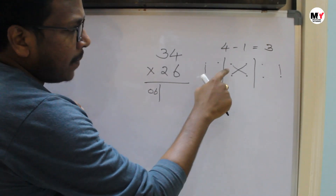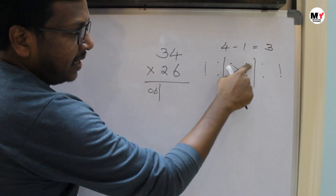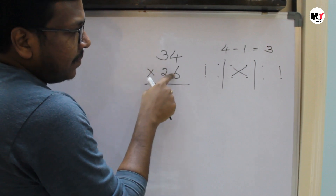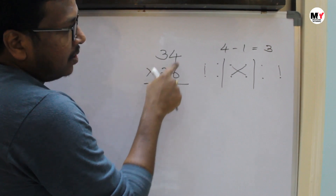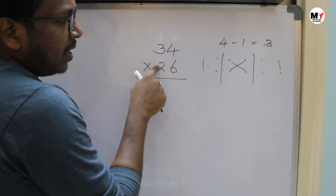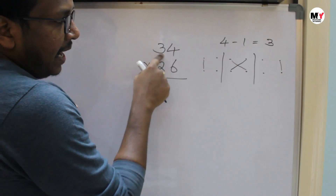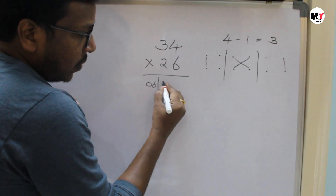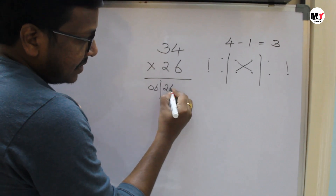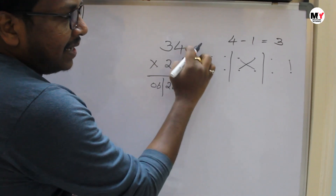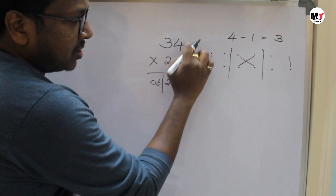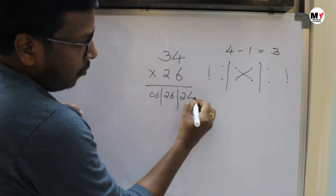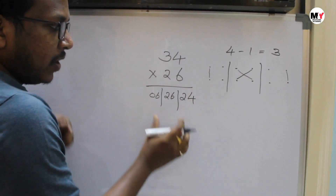Then multiply vertically and then add them: 3 times 6 is 18, and 4 times 2 is 8. 18 plus 8 is 26. Then multiplying the last two digits: 4 times 6 is 24.